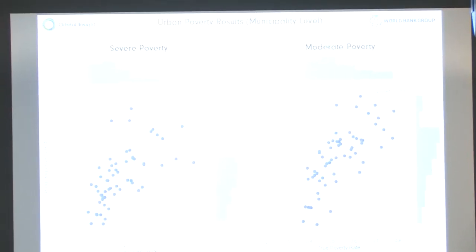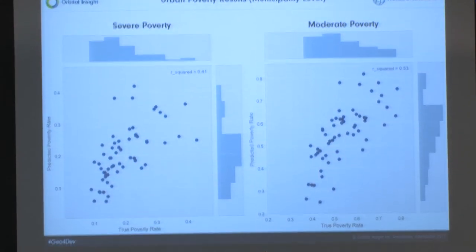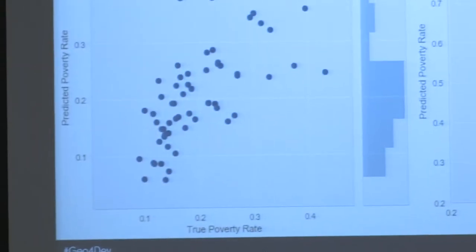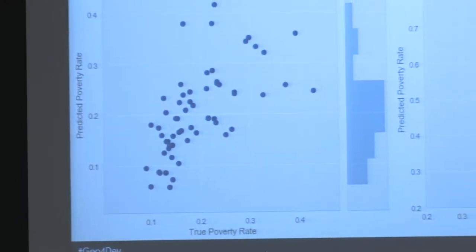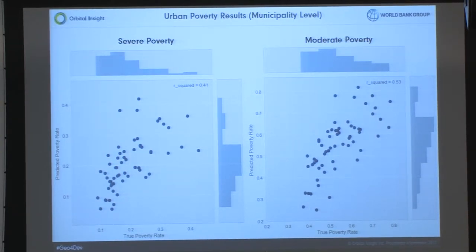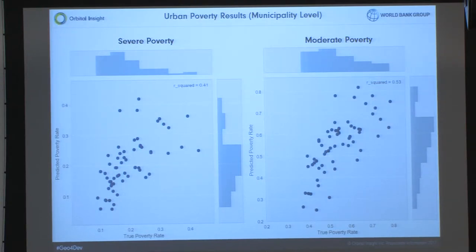These are the results on the withheld municipalities — urban estimates. The left scatter plot shows the predicted value for the first bin, severe poverty, and the right shows the sum of the first two bins — everybody who's poor, whether moderate or severely poor. The x-axis is the true value and the y-axis is the predicted value, with R-squared shown in the top right corners. We see that the model explains about 40 to 50 percent of the variation. For policy purposes you'd probably want it to be better, but as a first start it's pretty good.